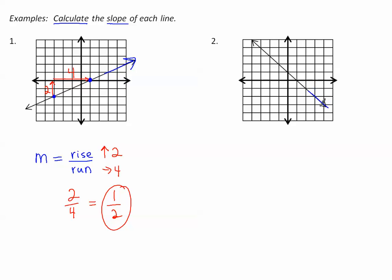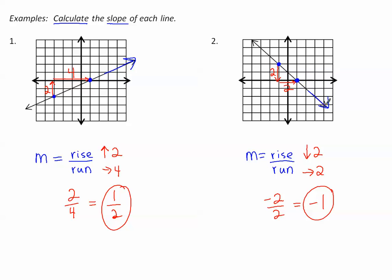Notice this line is coming down, so as we read left to right, going down means we need a negative slope. Slope is rise over run, so I find two points on this graph. Counting from left to right, I go down 2 blocks and then to the right 2 blocks. Down 2 means negative 2, over 2. That simplifies to negative 1. The slope is negative 1. This line is decreasing, so it has a negative slope. I could have picked two different points, but no matter which points I choose, it will always simplify to the same slope.